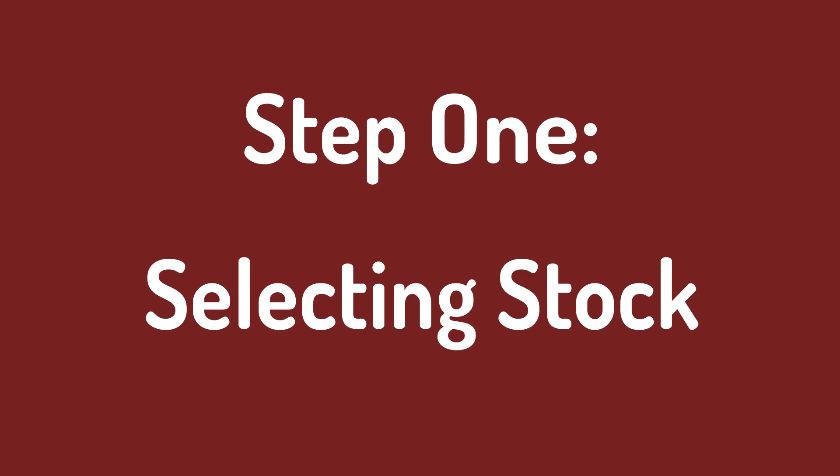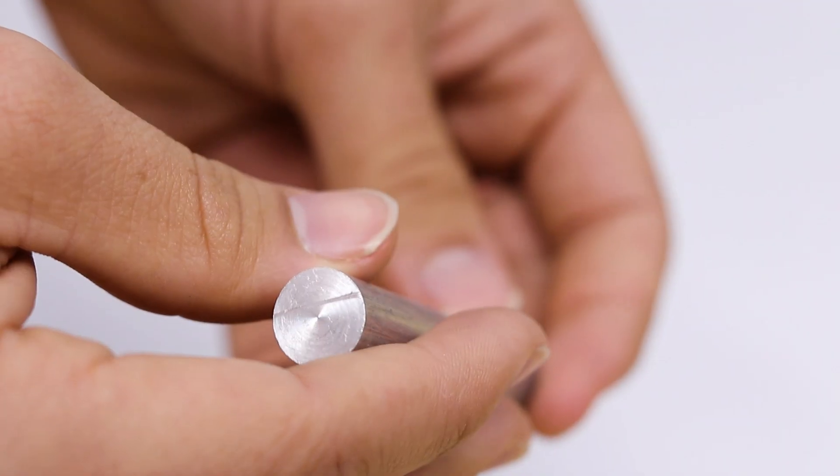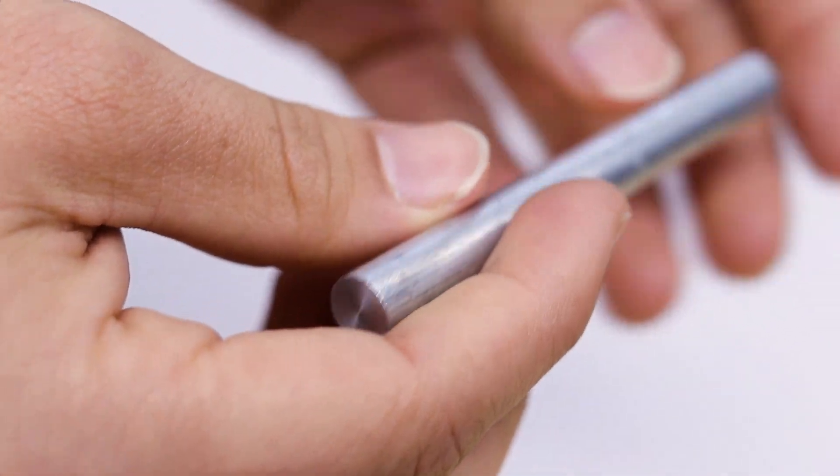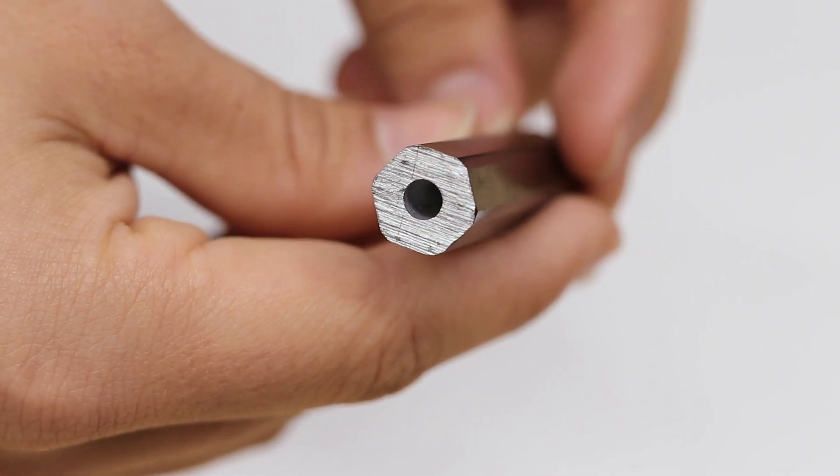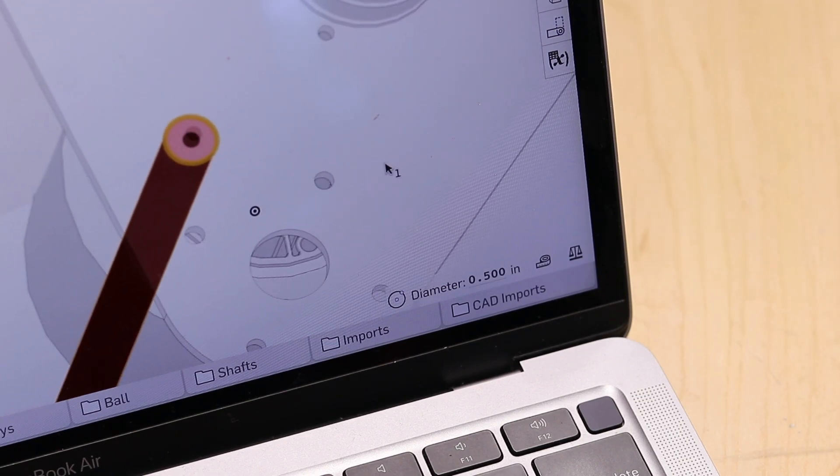Step 1, Selecting Stock. First, we'll select the stock, aka material that we'll be using. We use three main materials to make standoffs: half inch round stock aluminum, three eighths inch round stock aluminum, and half inch hex shaft aluminum. We can view the type of stock to use based on the CAD model. If you have any doubts about stock, don't hesitate to ask an experienced member.